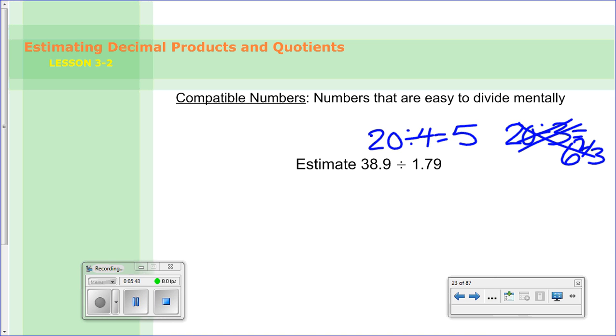So when we're estimating, it's not just about rounding to the nearest number anymore. What we end up having to do is make sure both numbers are compatible. So we have here 38.9 divided by 1.79. Well, if I were to round this up, I would get 39. And then, well, if I rounded 1.79 up, I'd get 2. 39 divided by 2, those are not compatible numbers. Because again, they don't go into each other evenly. You're going to have a remainder or a fraction.